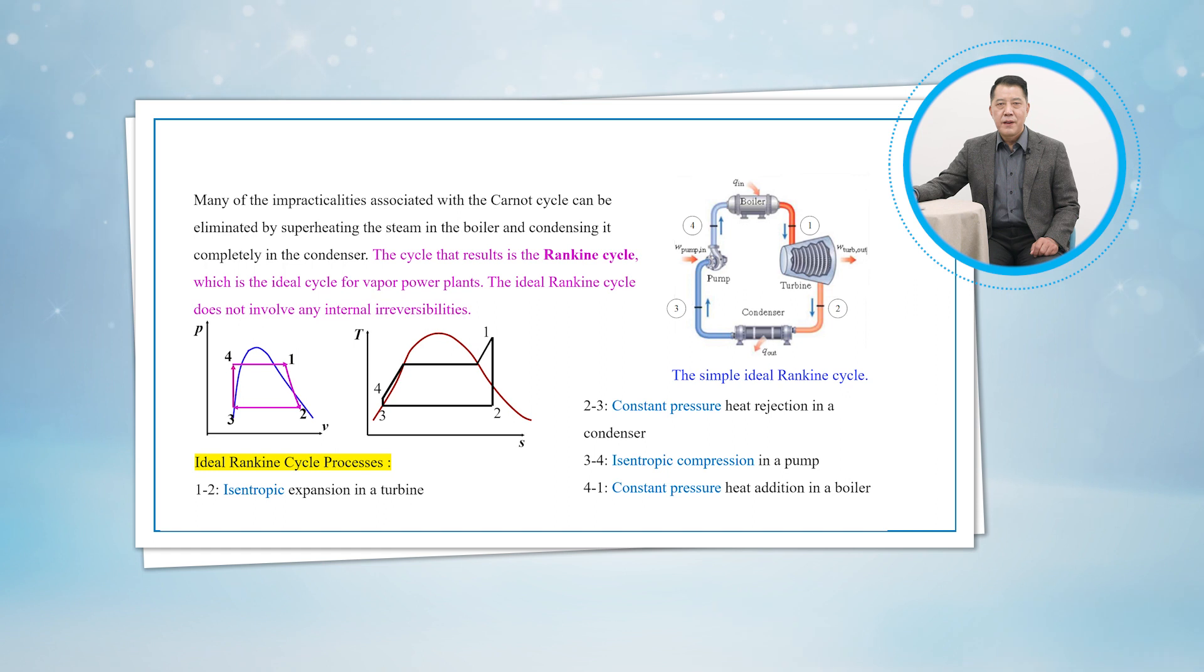1. Isentropic expansion in a turbine, processes 1-2. 2. Constant pressure heat rejection in a condenser, processes 2-3. 3. Isentropic compression in a pump, processes 3-4. 4. Constant pressure heat addition in a boiler, processes 4-1.